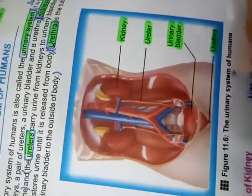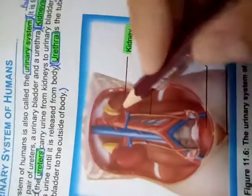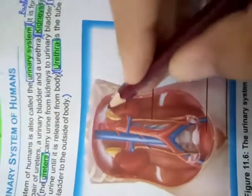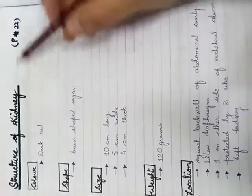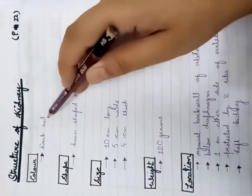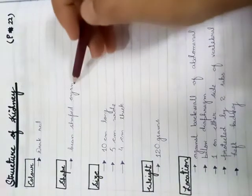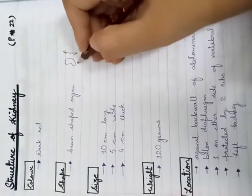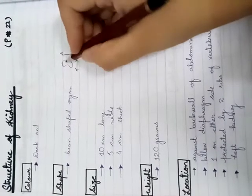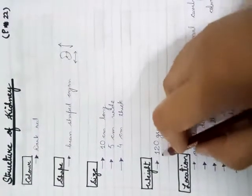Now let's go to the structure of the kidney, page 22. The color of the kidney is dark red. Its shape is bean-shaped — like a lobia bean. Size: the length is 10 cm, the width is 5 cm, and the thickness is 4 cm. The weight of one kidney is 120 grams.